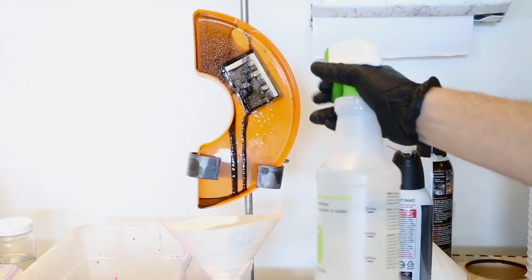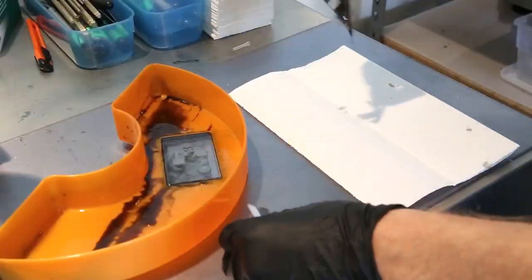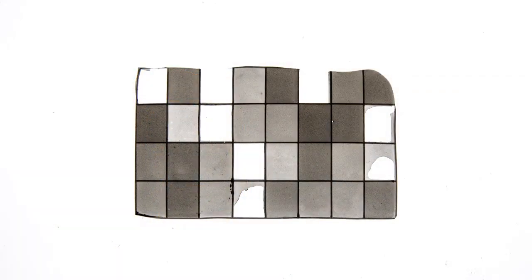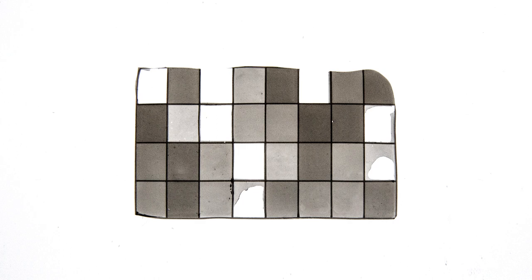After the print is complete, we wash off the uncured resin and are left with a thin film with distinct panels. The darker panels received more light and are thicker. Ones that receive less light are thinner. And some panels never reached a threshold amount of energy and did not solidify at all.